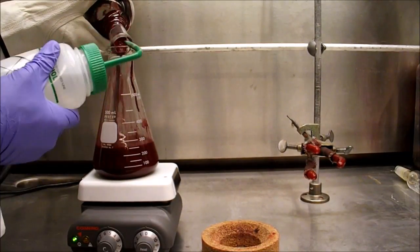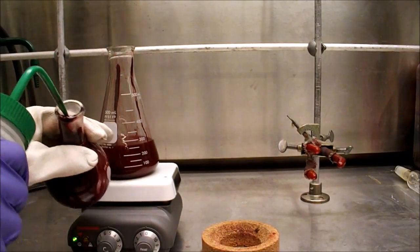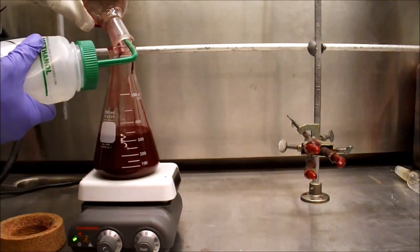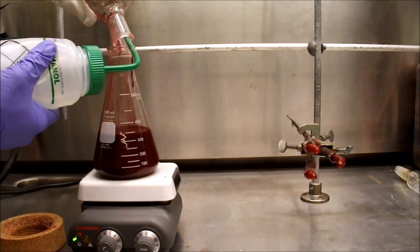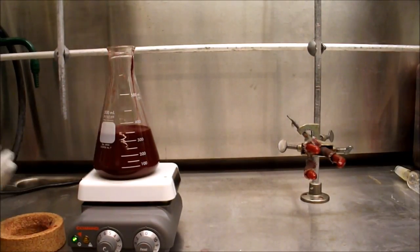In order to transfer all the reaction mixture to the Erlenmeyer flask, the round bottom flask is rinsed with methanol. Thanks to the very low solubility of ethylpropyl PDI in methanol, a large amount of methanol can be used in this rinsing step without having to be concerned about losing product.